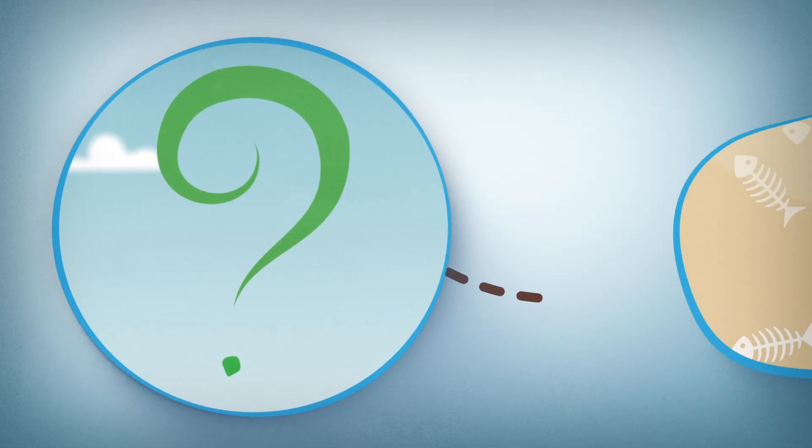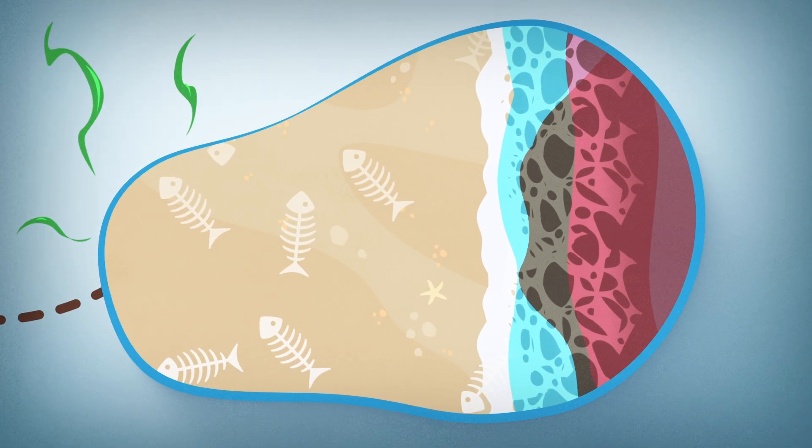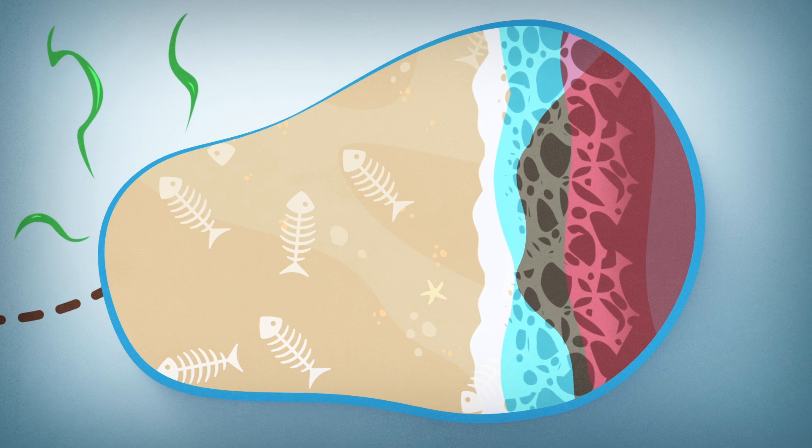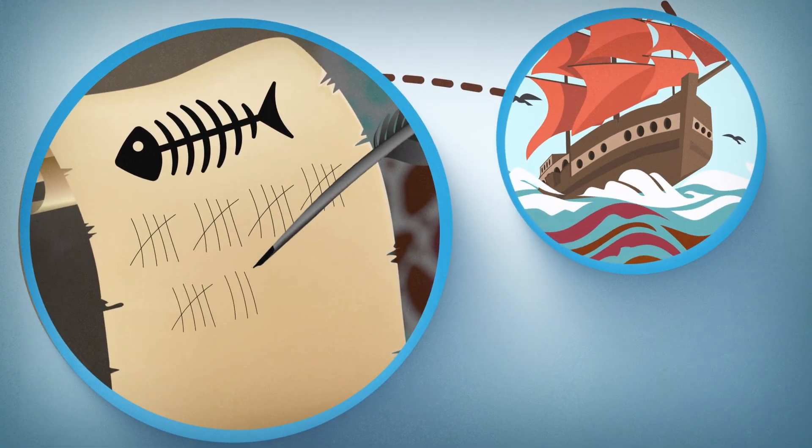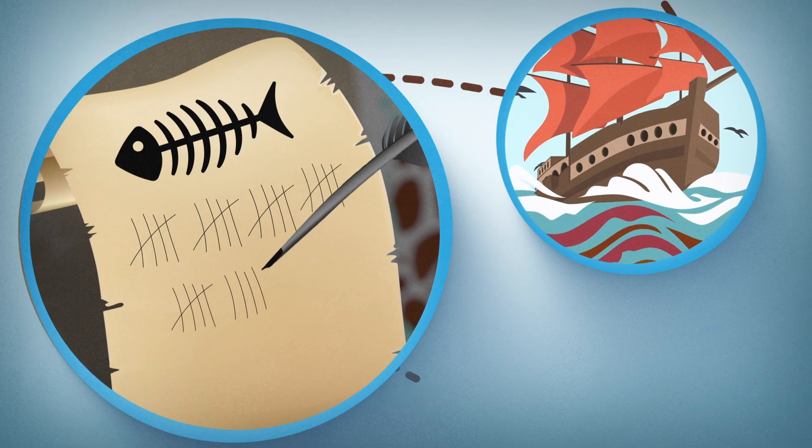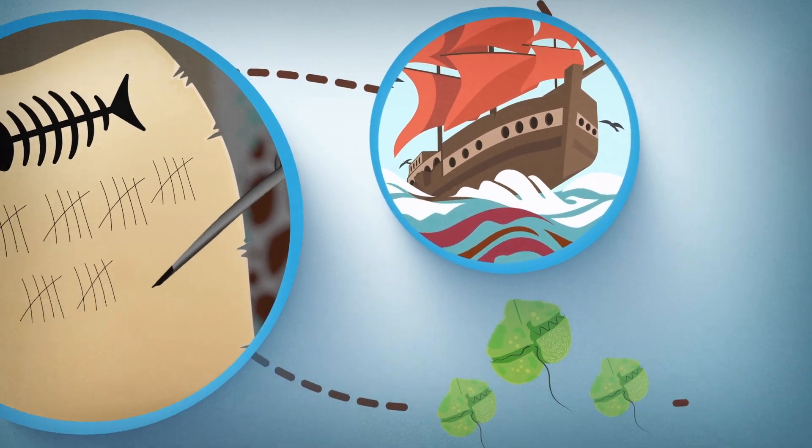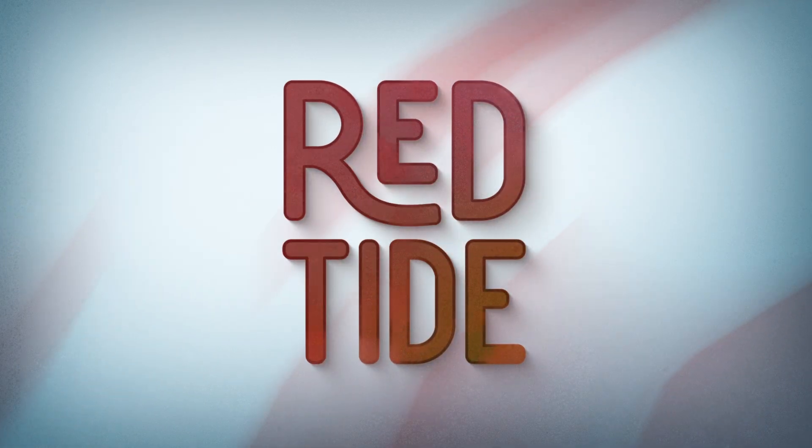Reports dating back to the mid-1800s circulated about peculiar odors and wildlife mortality in unusually colored water. Even earlier, Native Americans like the Timucua and Spanish explorers passing through the Gulf of Mexico documented large fish kills that might have been caused by an algae we now call red tide.